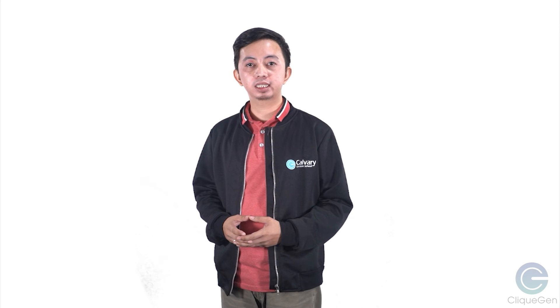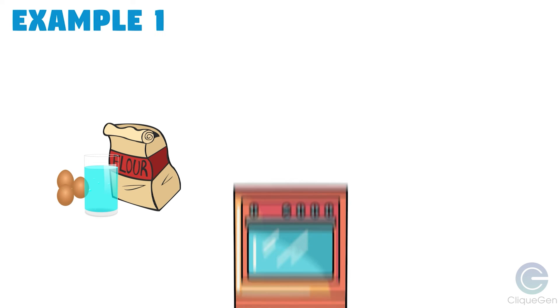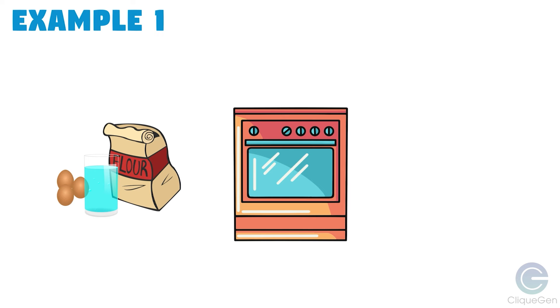The data information processing cycle does not only apply to computers. Here are some examples that show how we can apply IPOS in our daily lives. When a baker bakes bread, he first gathers all the ingredients like flour, water, and eggs — that is our input. Then the baking stage is the process, and the output is the bread.